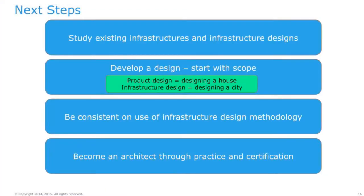Having covered all of this in a short time, the one thing I want to leave you with is: what are the next steps? Everyone has an opportunity to become a VCDX or an architect, whether you're in system administration or in other roles. If you've never done design before, look at your existing infrastructure and try to reverse engineer it — then look at individuals who may have worked on the project and compare notes. You also need scope for the design. Be consistent throughout the process and become an architect through practice and the certification process, whether it's VMware or other vendors.